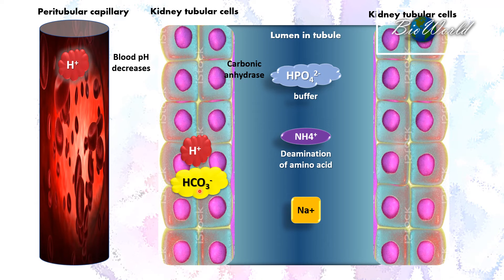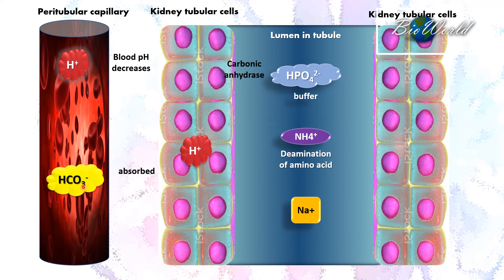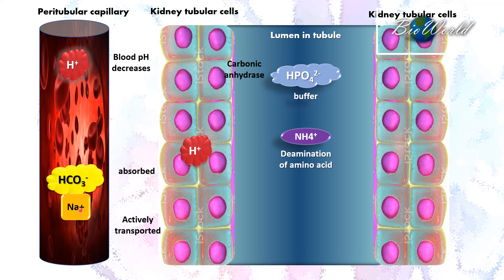The hydrogen carbonate ions produced in the kidney tubular cells will diffuse out and be absorbed into the peritubular capillaries. The sodium ions that were in the lumen of the tubule will be actively transported into the peritubular capillaries. Here, the sodium ions will combine with the hydrogen carbonate ions to form sodium hydrogen carbonate, which is an antacid that can neutralize the acidic pH of the blood. In this way, the blood pH can return to 7.4.